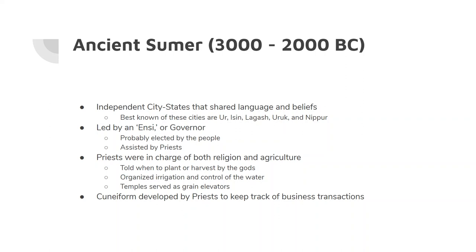Now the first of these is going to be Ancient Sumer, and Ancient Sumer existed kind of where the Red Sea and the Euphrates and the Tigris River meet. This would be in southwestern Iraq if you were to look at a map today. These are going to be some independent city-states, not one big kingdom, but they're considered a civilization because they have some shared languages and some shared beliefs — so they're culturally similar.